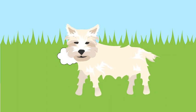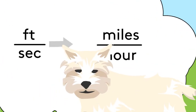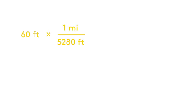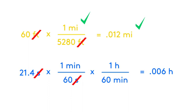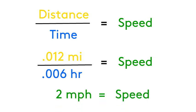But what units do you usually think of for speed? Maybe miles per hour? To convert from feet per second to miles per hour, we'll first multiply our distance, 60 feet, by 1 mile over 5,280 feet — a fraction equal to 1 that gives us miles in the numerator. Then we'll multiply 21.4 seconds by 1 minute over 60 seconds, and again by 1 hour over 60 minutes, to leave us with hours as our unit of time.